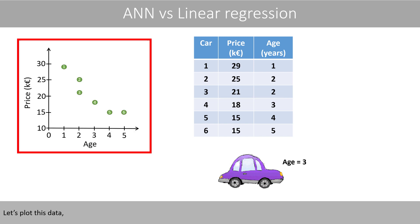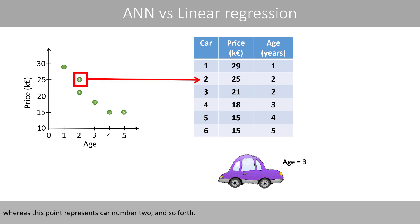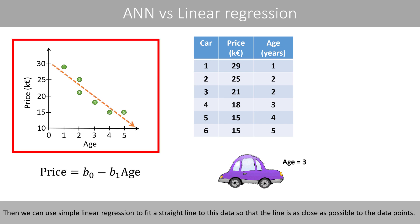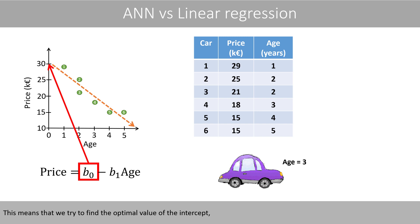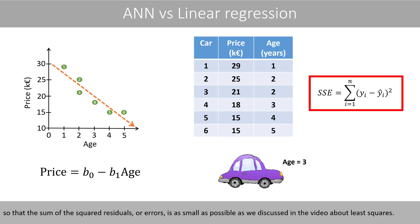Let's plot this data, where this data point represents car number 1, whereas this data point represents car number 2, and so forth. Then we can use simple linear regression to fit a straight line to this data, so that the line is as close as possible to the data points. This means that we try to find the optimal value of the intercept and the slope, so that the sum of the squared residuals, or errors, is as small as possible.